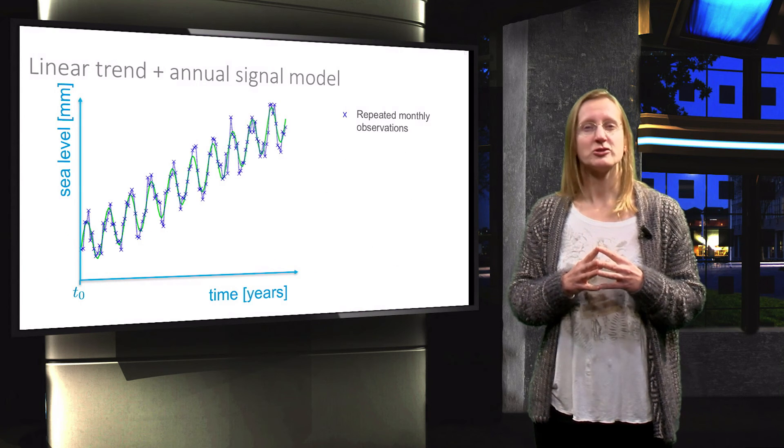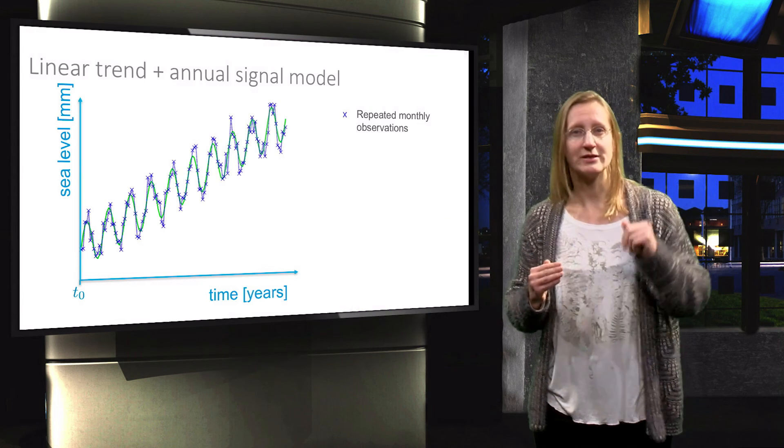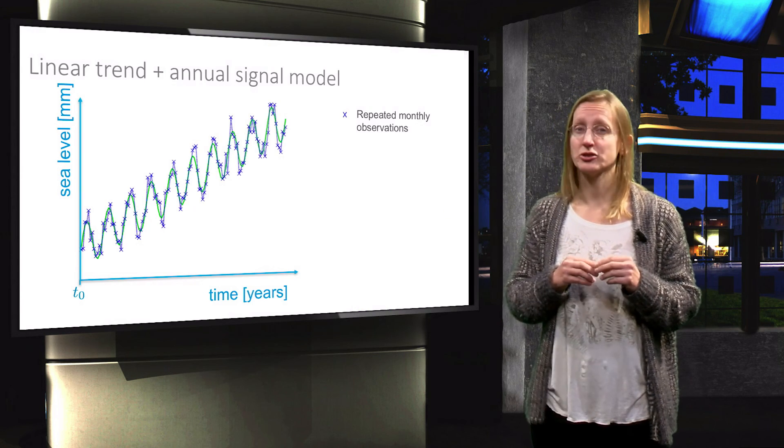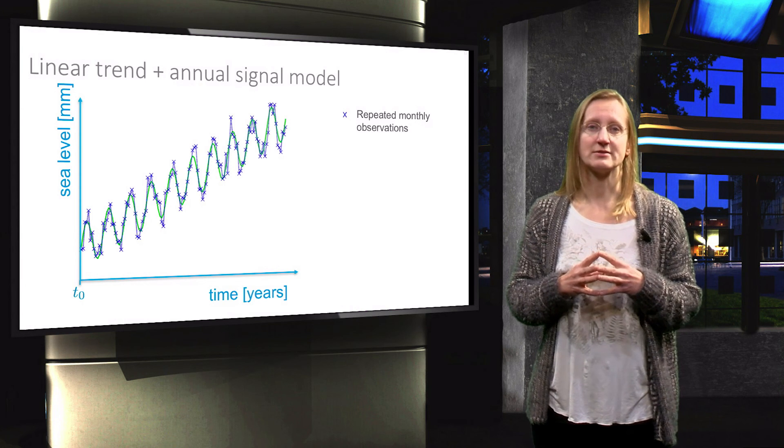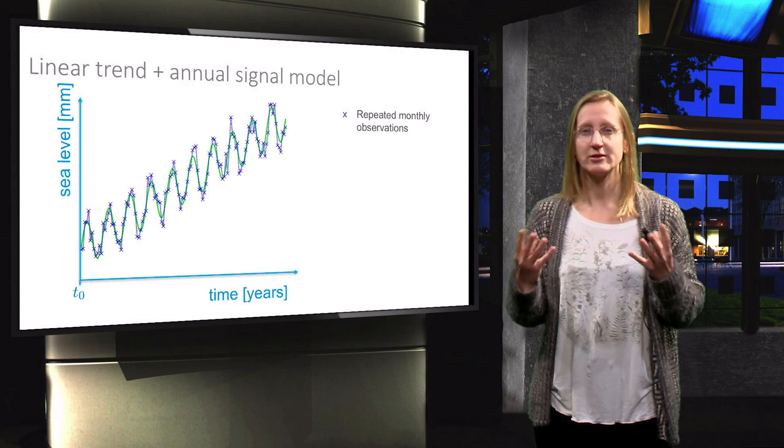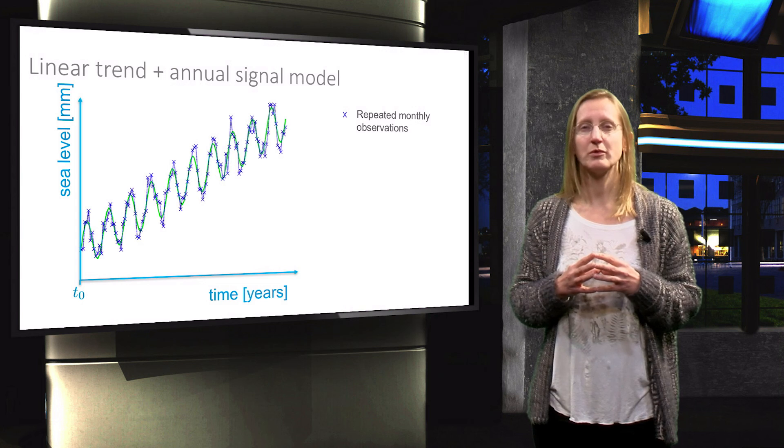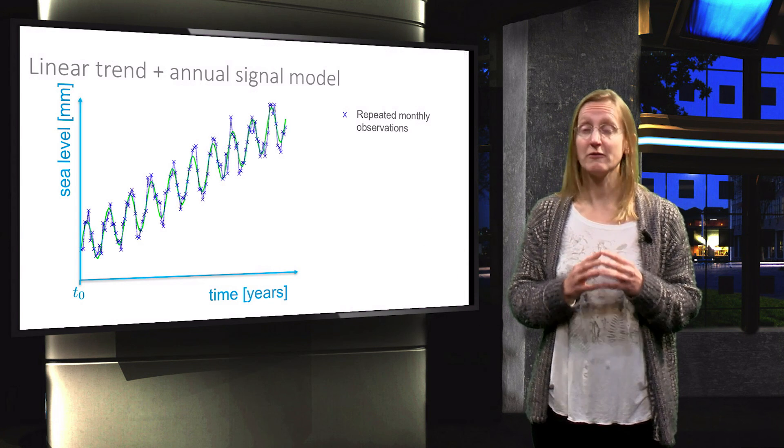You will now derive the functional model where you will be considering the combination of a linear trend and an annual signal, as shown with the green graph in this plot. This is one of the exercises. Now that we know how the functional model is defined and can be set up for a particular estimation problem, in the following lecture we will look at specific properties of the functional model.